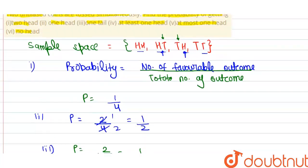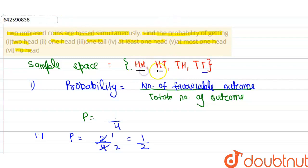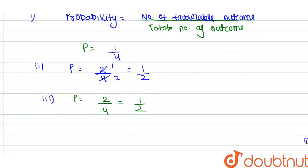For case four, we have to find the probability of at least one head. At least one head means one or more than one head is possible. We have three favorable conditions, so the favorable outcome is three and the total number of outcomes is four, giving probability three by four.